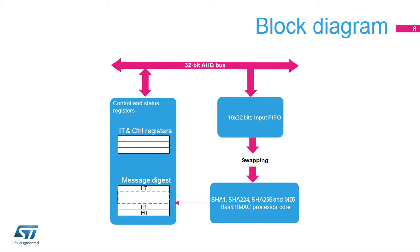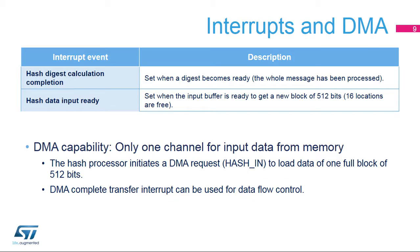The hash processor processes 512-bit data blocks and generates digests of up to 256 bits, depending on the algorithm. Input data may be swapped before entering the core unit, where they will be processed to generate a simple hash or a MAC. An interrupt in the Nested Vectored Interrupt Controller, or NVIC, is triggered when a hash digest has been successfully calculated or when the hash processor is ready to accept a new block of data.